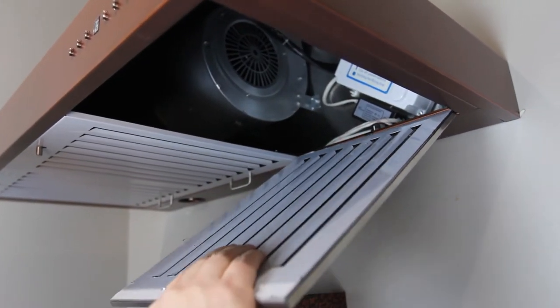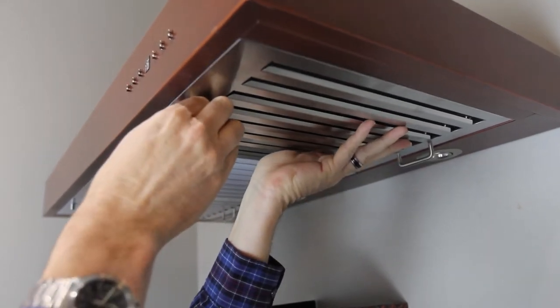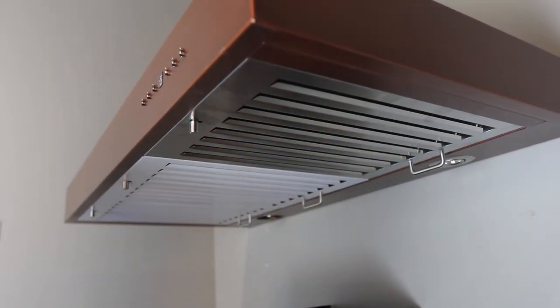After the protective coating is completely removed, secure the back of the filter in the range hood and use the spring clasp to secure the front.